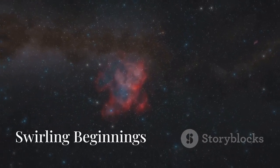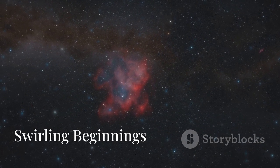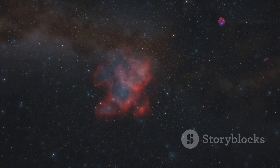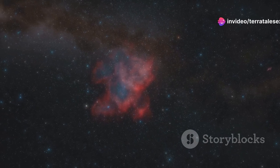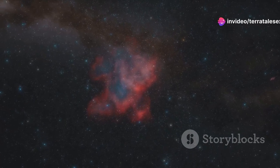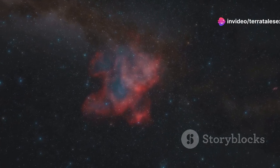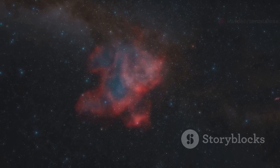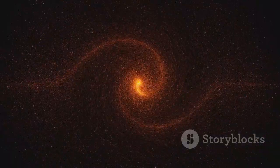The nebula that birthed our solar system was in constant motion, a vast cloud of gas and dust swirling through the cosmos. This nebula, rich in elements, was the cradle of our solar system. Pulled by gravity, particles of dust and gas began to swirl around a dense center, creating a spinning disk.